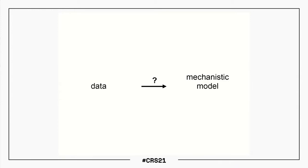What these scenarios have in common, of course, is that we start off with a piece of data and we have some mechanistic model, at least in a loose sense, and we want to bridge the gap between the two of them. Each of those models has parameters, so even if we've committed to a particular model class, we still have to find out what parameters within that model class would be realistic.